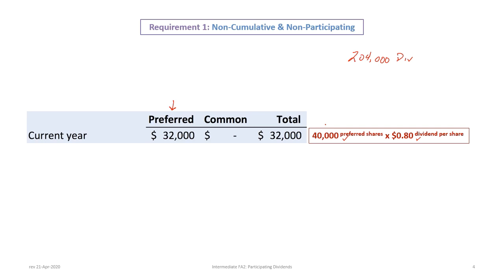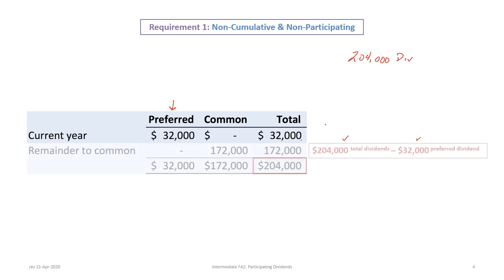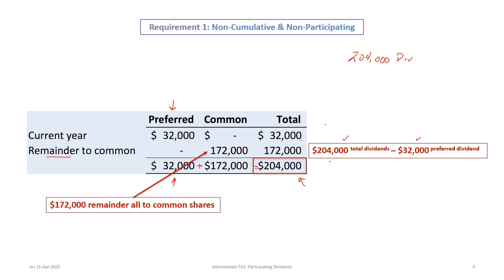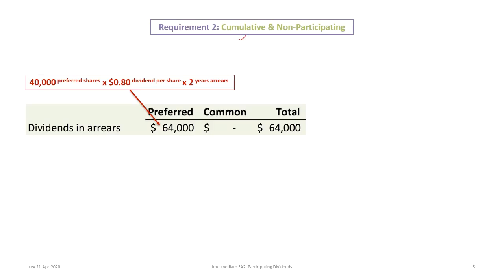We create columns for preferred, common, and a total. Since the total dividend is $204,000 and the preferred shares are non-cumulative and non-participating, all the remainder goes to the common shares. $204,000 minus $32,000 in preferred is $172,000 for common. The total column confirms $32,000 plus $172,000 equals $204,000. This is the easiest type of combined dividend to deal with.